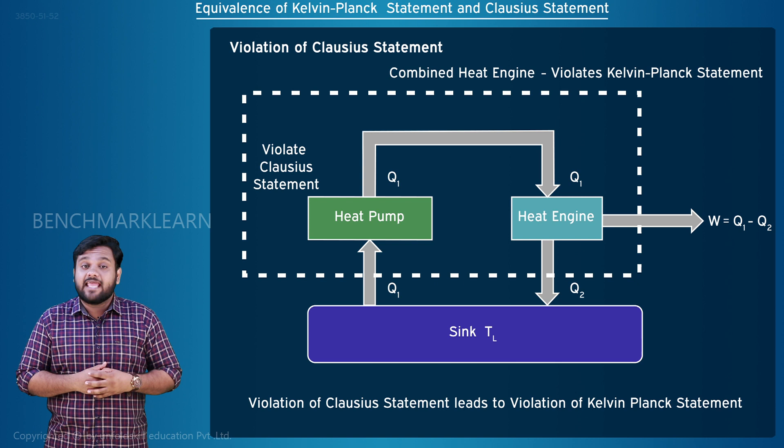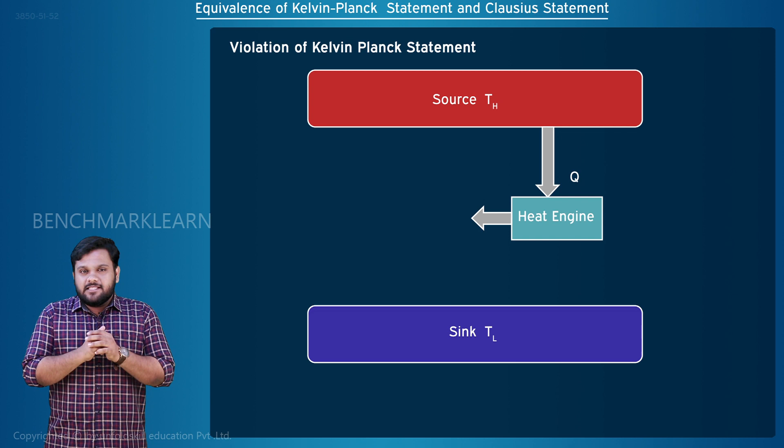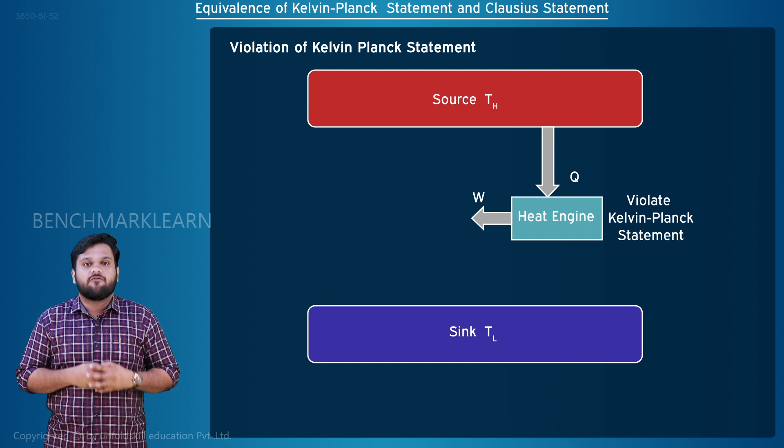Now let us consider a heat engine that interacts with a single reservoir only and produces work. This heat engine violates the Kelvin-Planck Statement. Here heat Q is drawn from the hot reservoir to do work W. Since there is no heat transfer from the hot reservoir to the cold reservoir, the work done W is equal to heat Q.